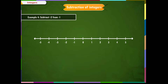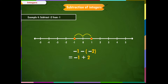Example 4: Subtract minus 2 from minus 1. We write this problem as minus 1 minus (minus 2). Using the above rule, we get minus 1 plus 2, which is equal to 1.